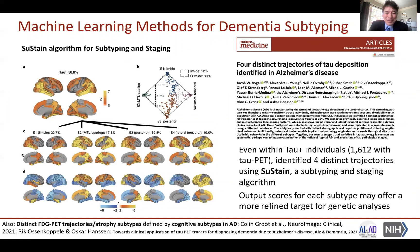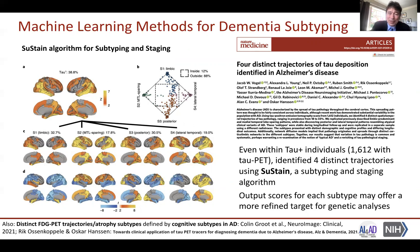One complexity in classifying Alzheimer's disease and dementias is that all these processes are progressive — going on at the same time and also progressing. A landmark study by Jacob Vogel and colleagues in Nature Medicine identified four different subtypes in the way tau pathology progresses, the systems affected and the sequence, using a method called SUSTAIN — an algorithm for subtyping and staging that outputs scores for a given patient indicating their stage and subtype, with a possible continuum of processes. Similar work is being done with FDG PET to look at metabolism, where trajectories and subtypes are defined by data-driven clustering and cognitive subtypes, with Colin Cruchaga, Rick Ossenkoppele, and Oscar Hansson relating these trajectories to different clinical subtypes.